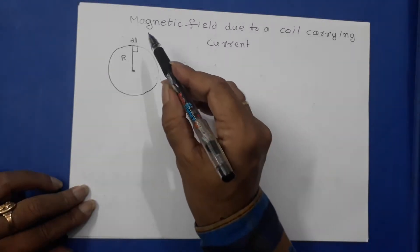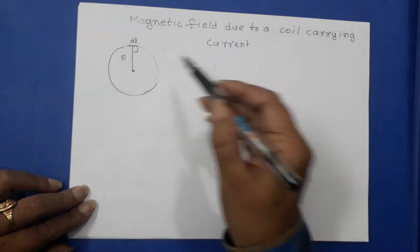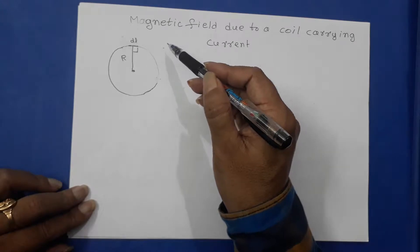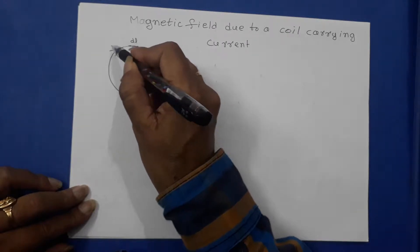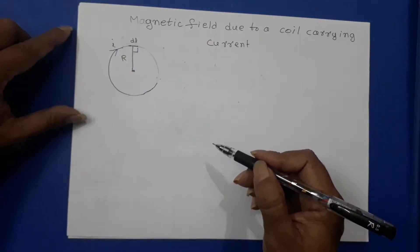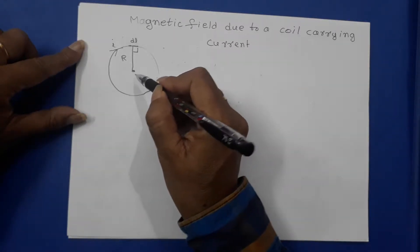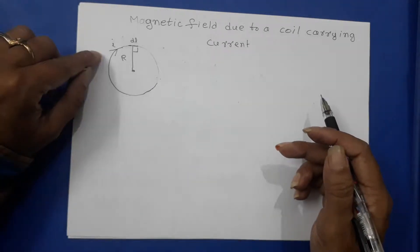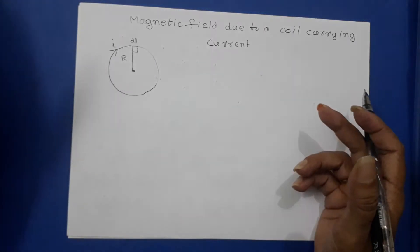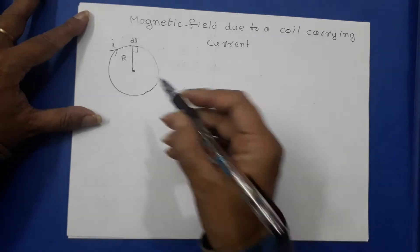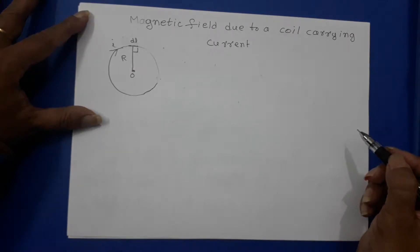Dear students, today our concept is magnetic field due to a coil carrying current. This is a coil; its radius is R and current I is passing through the coil. I want to find the magnetic induction field strength at the center of the coil. When current passes through the coil, it behaves like a magnet and creates a magnetic field.